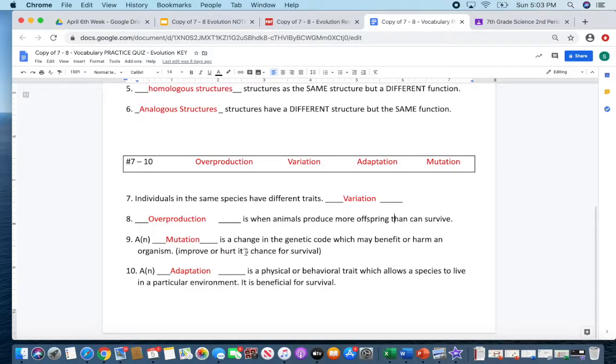Number nine, a mutation is a change in genetic code. Remember, some mutations are bad. They can hurt the organism. Imagine if we had a mutation that had a third leg. Would that be good for us? No, exactly.